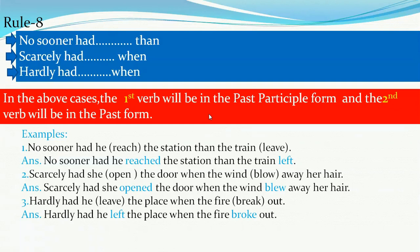Rule eight has three patterns: 'no sooner had... than,' 'scarcely had... when,' and 'hardly had... when.' In the above cases, the first verb will be in the past participle form and the second verb will be in the past indefinite form.